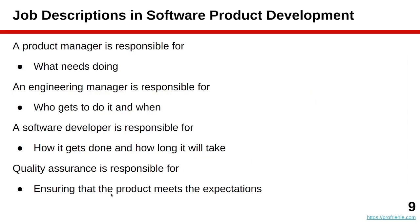The product manager knows what needs doing for customers in the market. The engineering manager knows who should do different things, assigning and ordering tasks. Software developers are responsible for doing their job and often help with estimating how long it might take. Similarly, a quality assurance engineer is responsible for testing and providing feedback that the product meets the requirements.